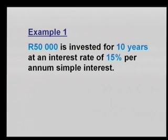For example one, $50,000 is invested for 10 years at an interest rate of 15% per annum simple interest. Whenever you face a situation like this, I get my students to always write down A, P, I, and N — because then you know what you're dealing with, what the knowns and the unknowns are.